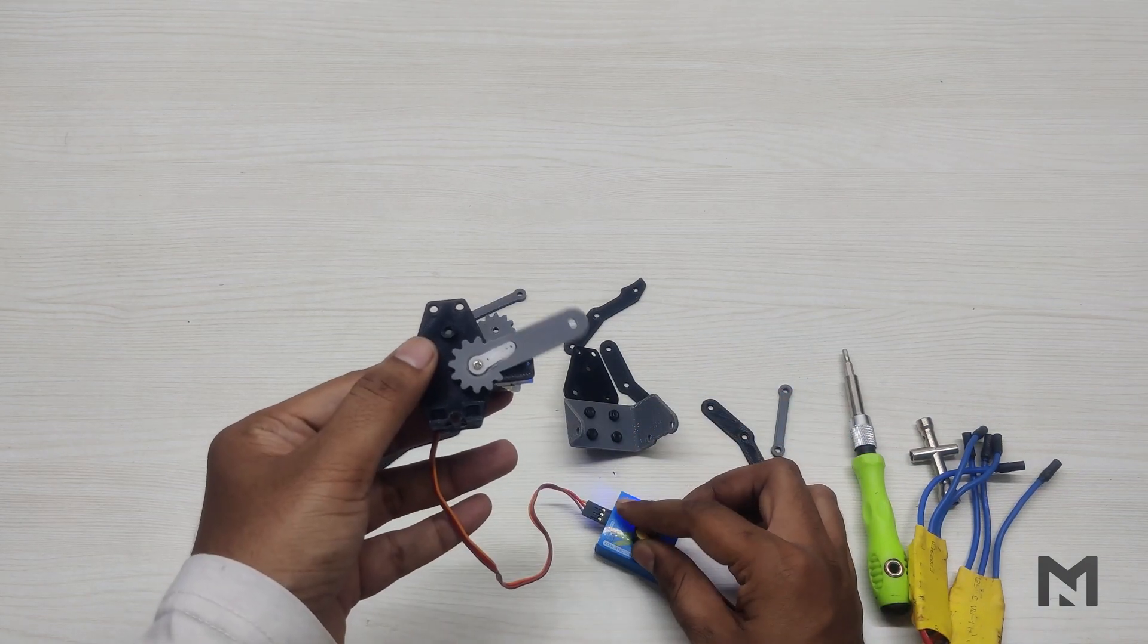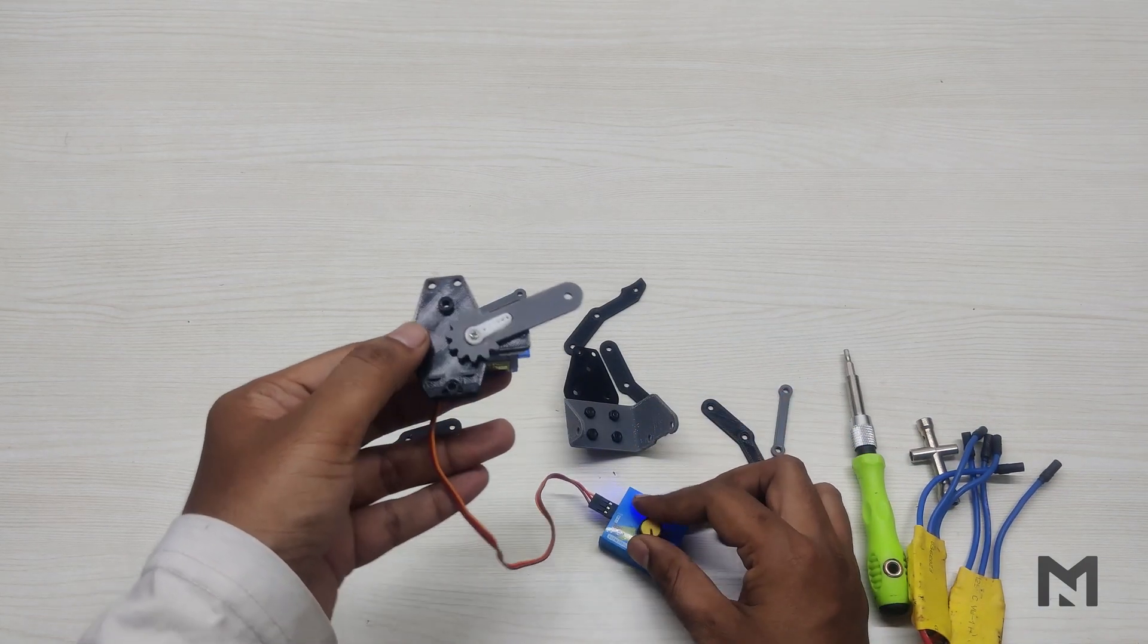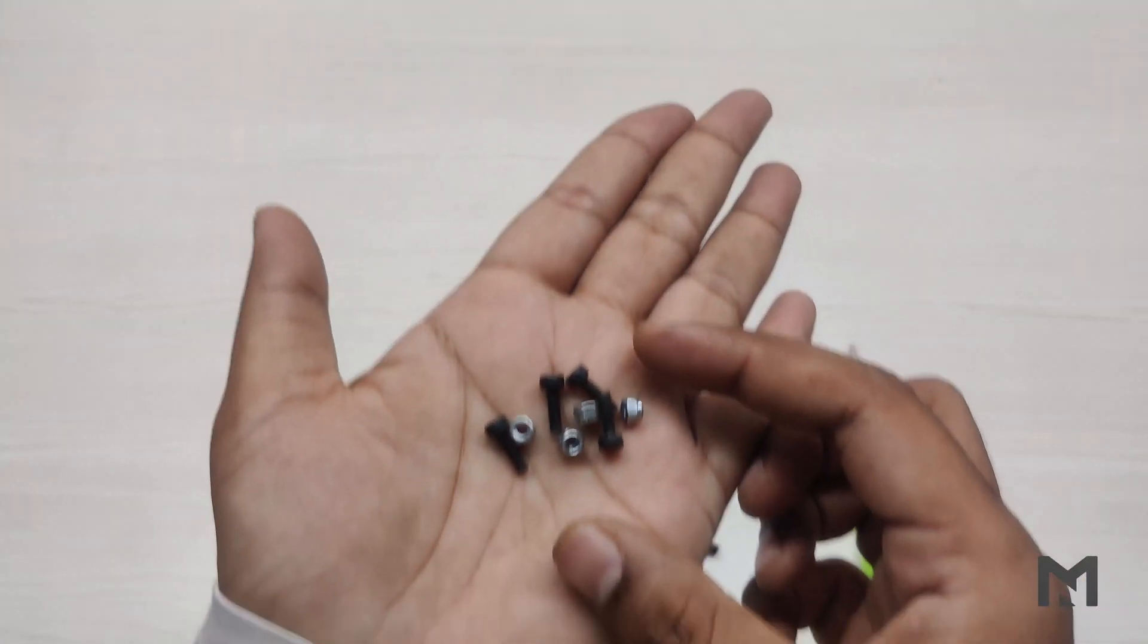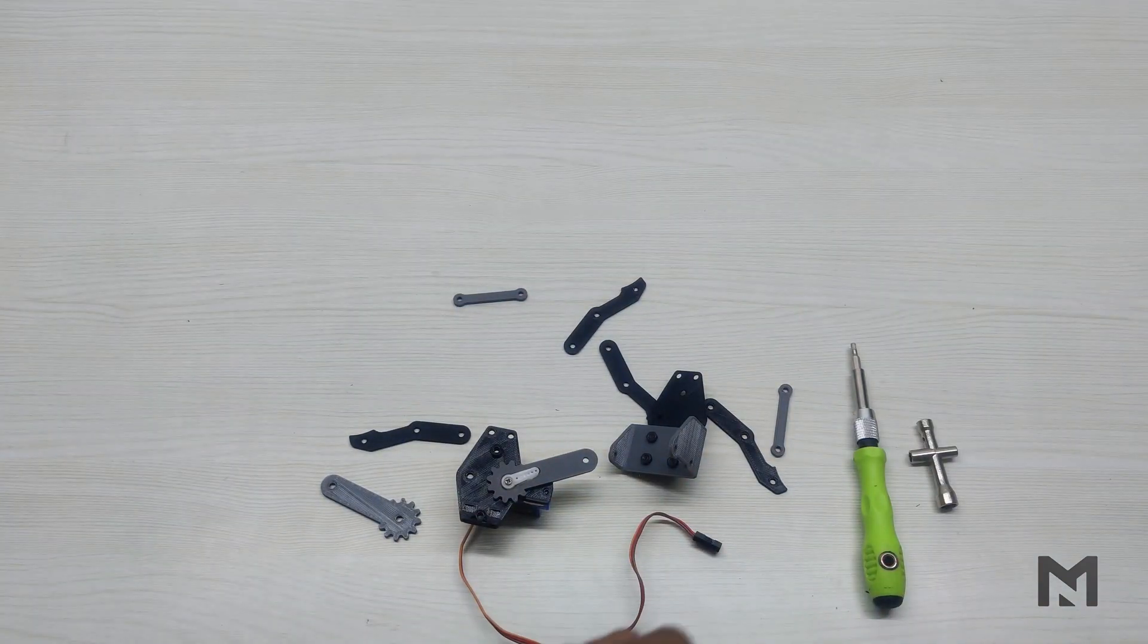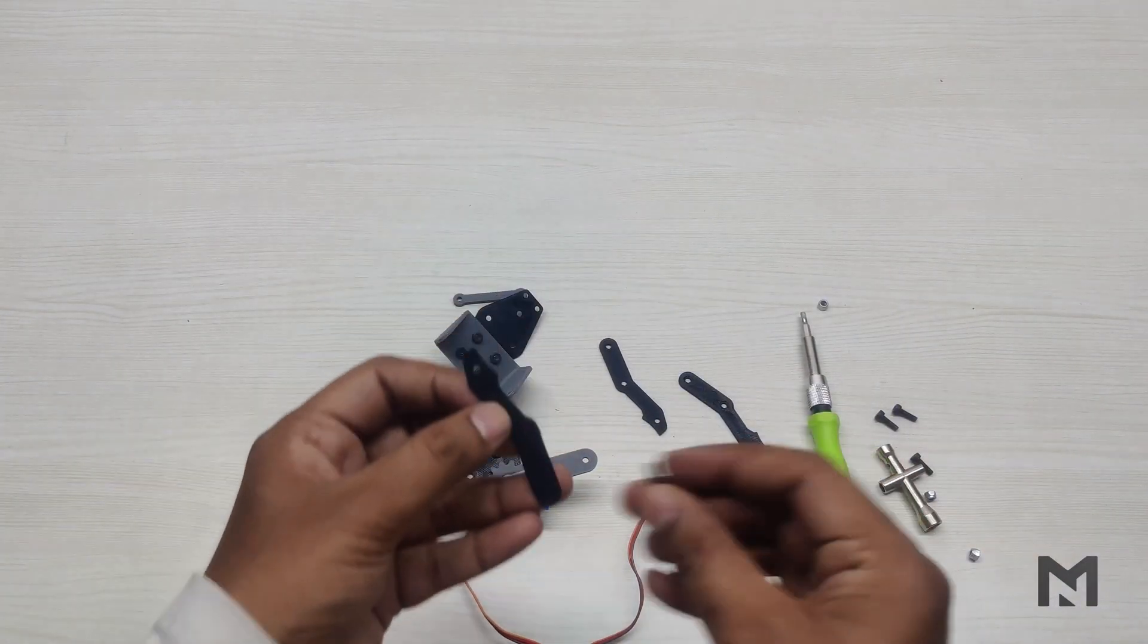Then test the claw and change its position if it's misplaced. I am using M3 nuts and bolts of 10mm length to mount the remaining pieces of the claw. I am using a nylock nut to prevent the loosening of the nut from vibrations.